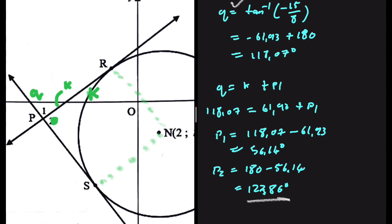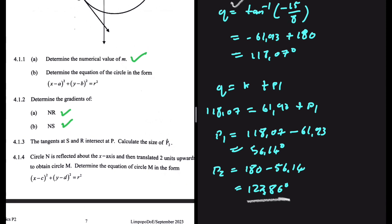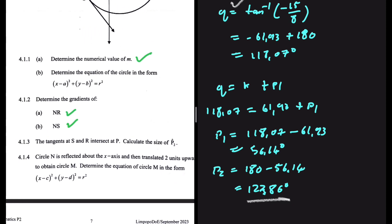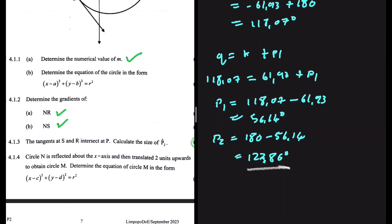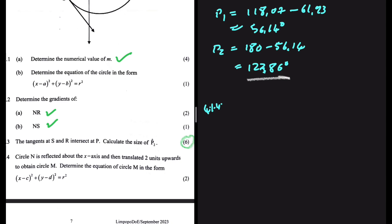That was a long exercise, but we have completed 4.1.3. Let's move to 4.1.4: circle N is reflected about the x-axis and then translated two units upwards to obtain circle M. We need the equation of circle M in the form (x minus c) squared plus (y minus d) squared equals r squared.